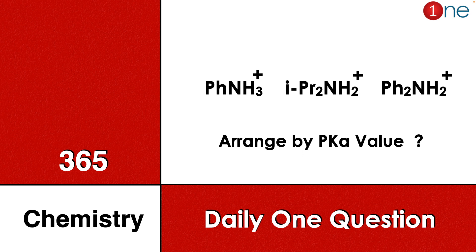Welcome to One Chemistry. This is the 365 Chemistry Series — one daily question for you. Here, three different amines are given. One is in the quaternary form, which is why it is a cation: PhNH₃⁺, isopropyl amine ((iPr)NH₂), and aniline (PhNH₂). You have to find which one is more acidic and arrange them by pKa value.